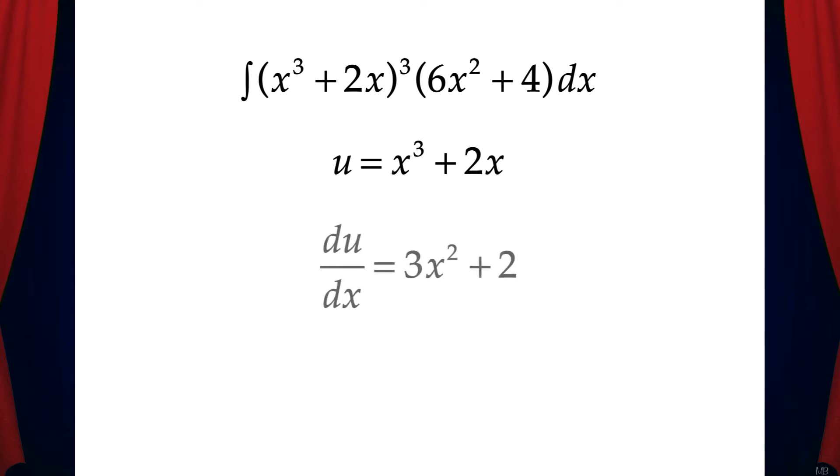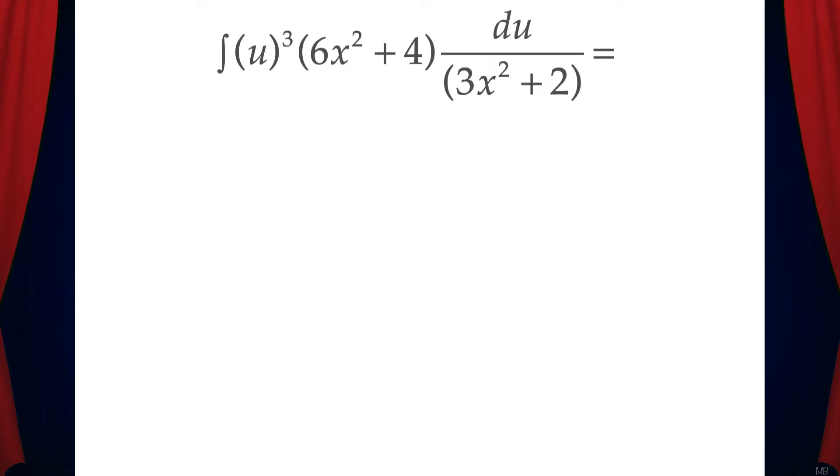Then we'll find du dx, which is 3x squared plus 2. Now let's solve for dx. That gives us dx equals du over 3x squared plus 2. Now let's make substitutions to get the integral in terms of u only. Note that I've substituted u for x cubed plus 2x, and I've also substituted du over 3x squared plus 2 for dx.